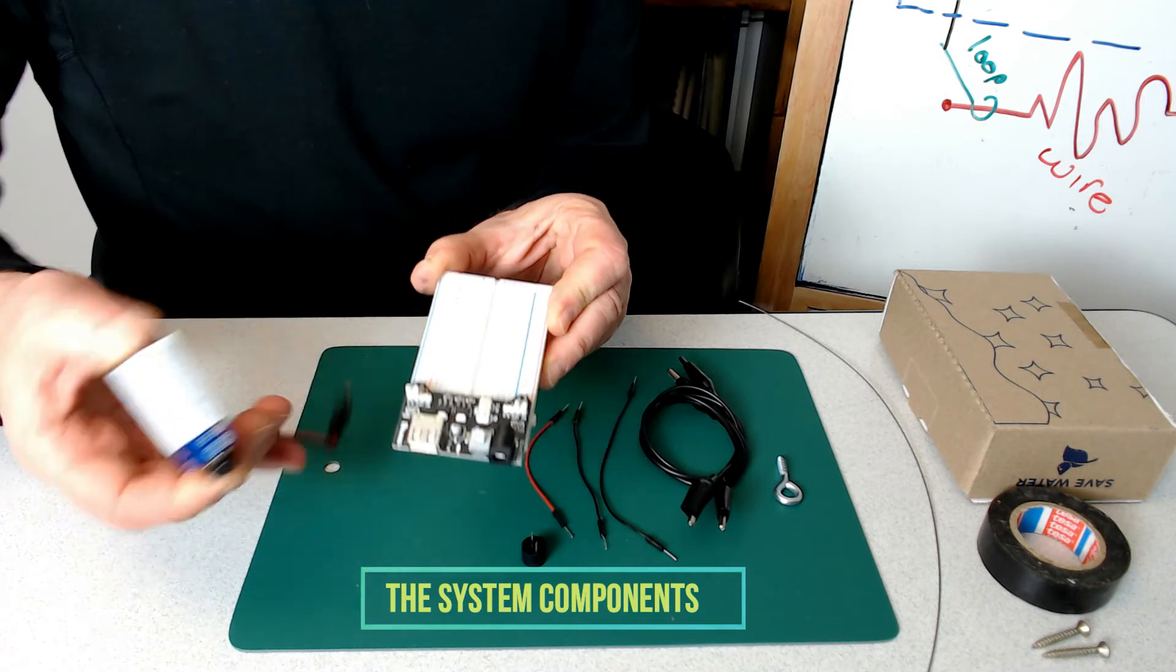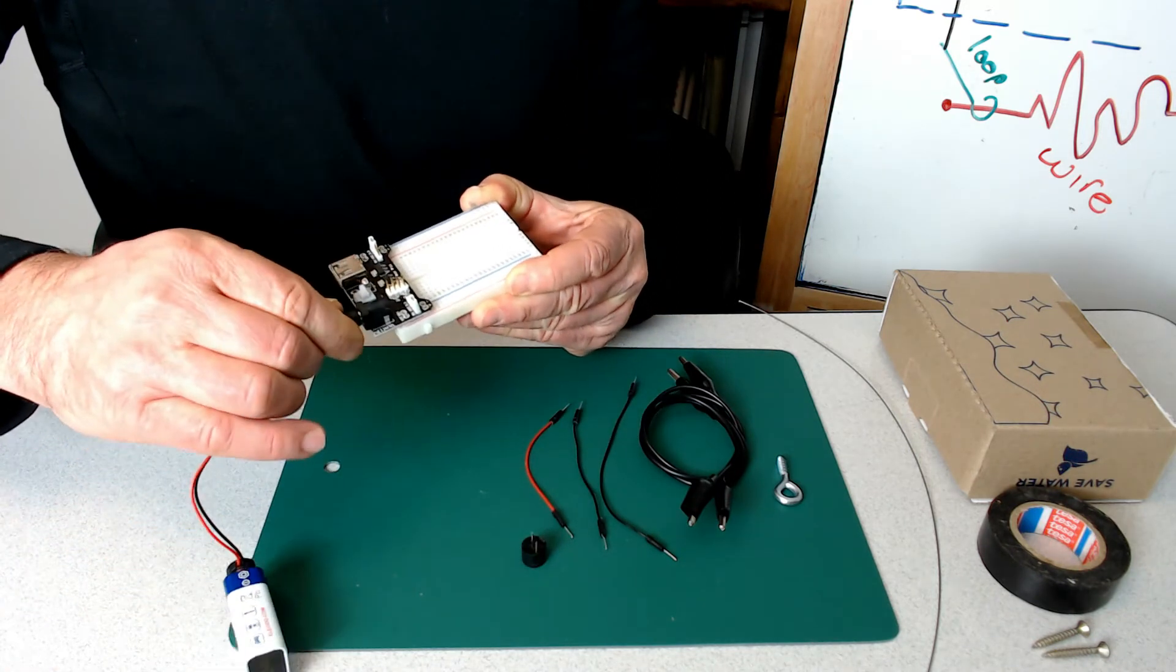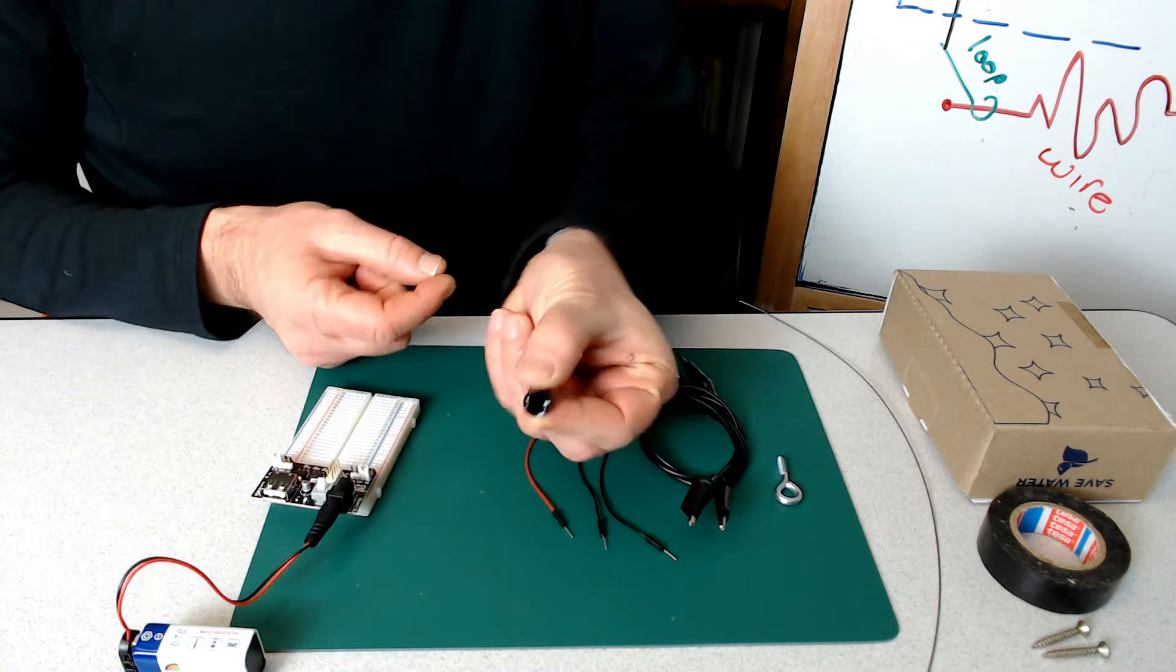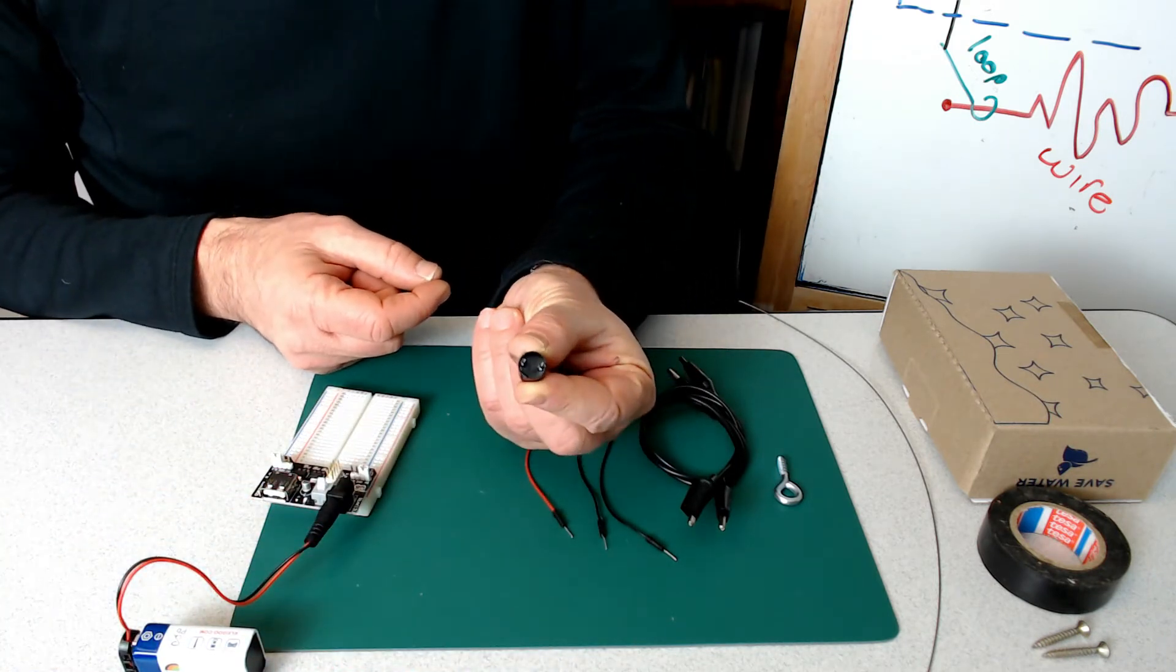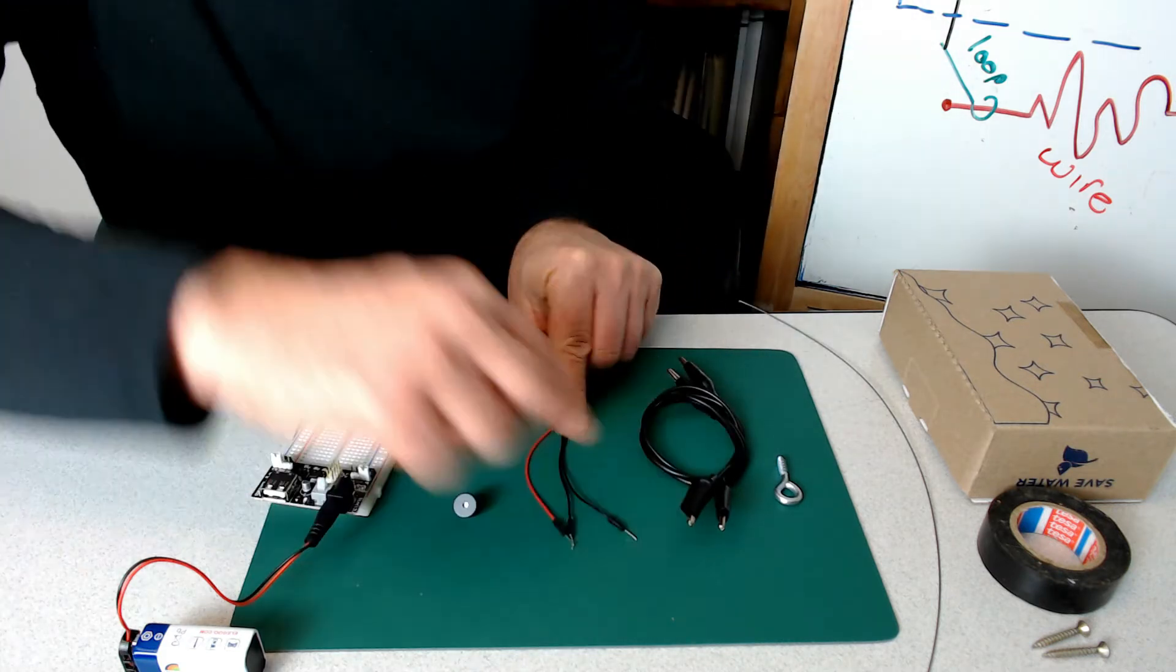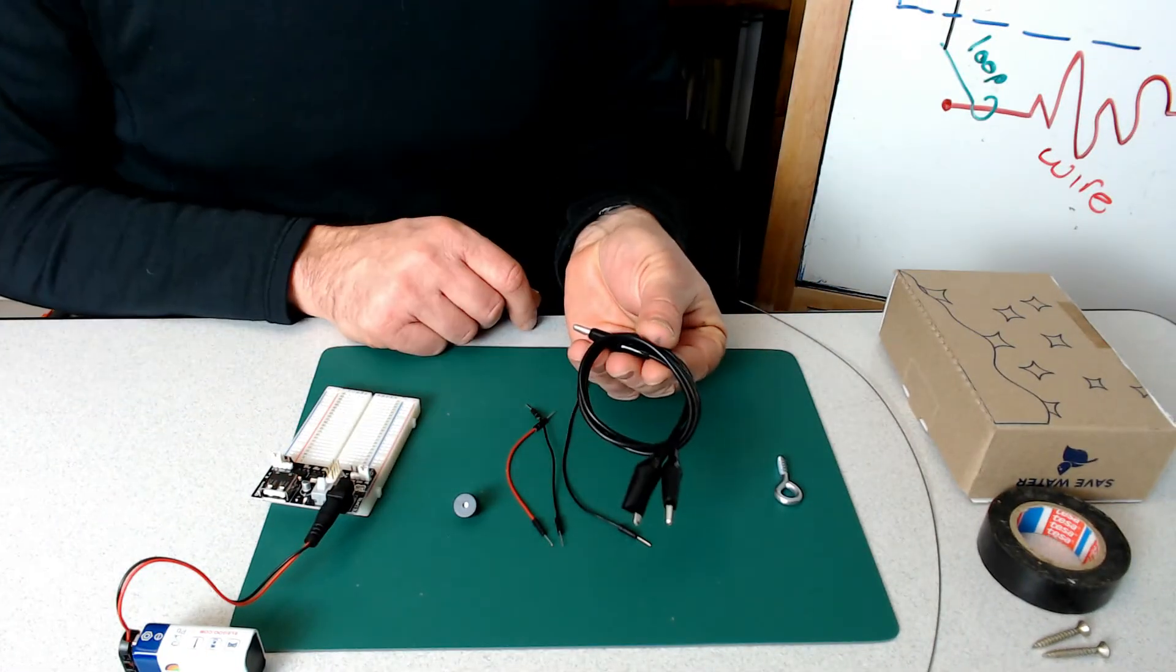So what do we need for this project? We need our battery, our power delivery board and the breadboard. We need the buzzer. Note the buzzer has a positive and a negative side. We'll talk about that later. We need three wires, preferably black and red.